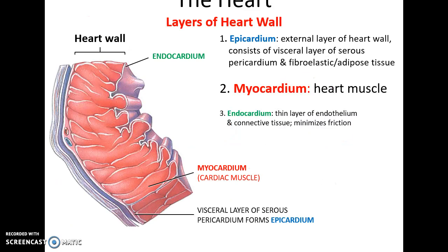The layers of the heart wall: the outermost superficial layer is the epicardium, which is composed of the visceral layer of the serous pericardium, as well as additional fibroelastic and adipose tissue on the surface of the heart. Deep to that is the myocardium, the thickest layer where all the muscle tissue is found. And then finally, there's a thin endocardium lining the inside of the heart, made up of a thin layer of endothelium, there to help minimize the friction inside the heart with all the blood cells rushing through and beating against the heart walls.